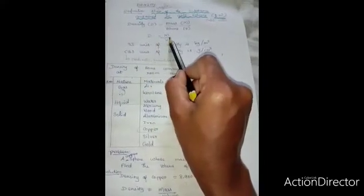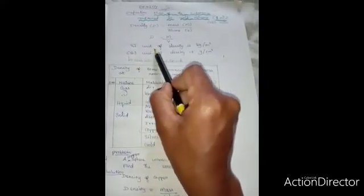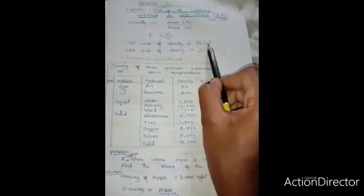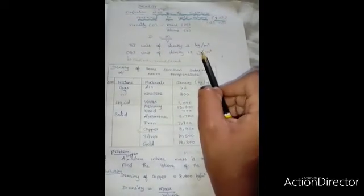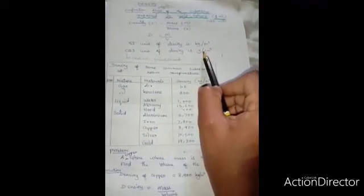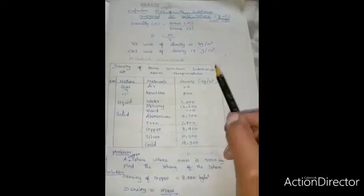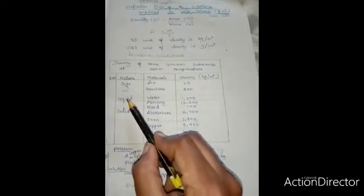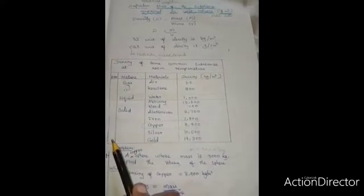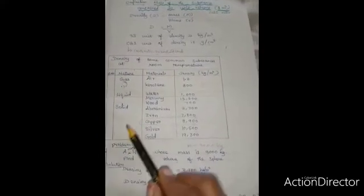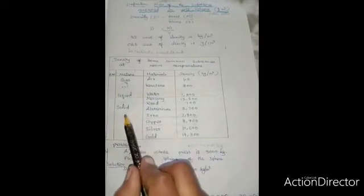D equal to M by V. The SI unit of density is kilogram per meter cube. In CGS unit, grams per centimeter cube. Here, observe the table showing the density of some common substances at room temperature. It may be a gas, liquid or solid.